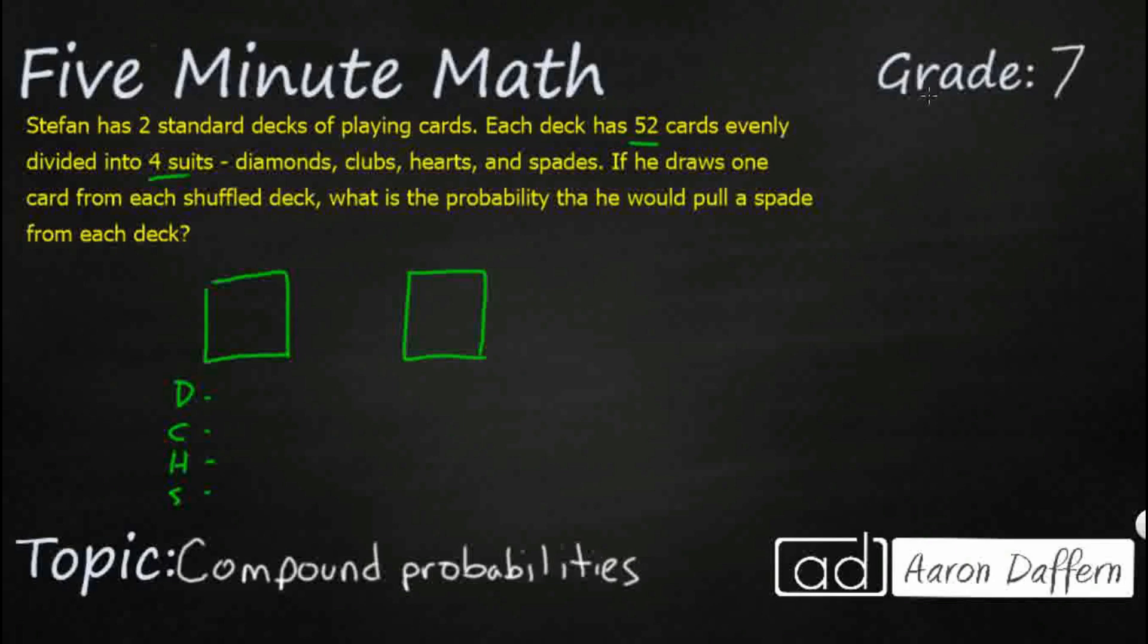And so, we've got that 52 evenly divided. So, let's go ahead and just divide that there. I'm not sure what that is. That is going to be, there we go, 13. All right, so we've got 13 of each. And I can say the same for this other one. Diamond, clubs, hearts, and spades. 13, we know our denominator is going to be 52.